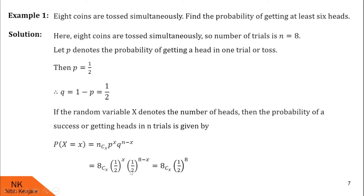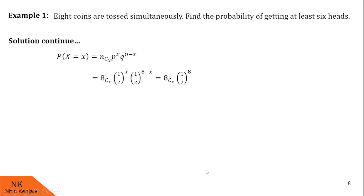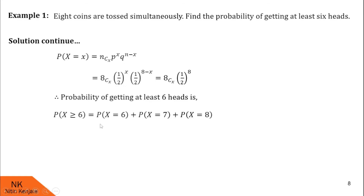Since these two bases are the same, we add their powers. x plus 8 minus x is just 8. So we are left with 8Cx * (1/2)^8. This is the formula for P(X=x). Now we find the probability of getting at least 6 heads — that is P(X ≥ 6), which equals P(X=6) + P(X=7) + P(X=8).